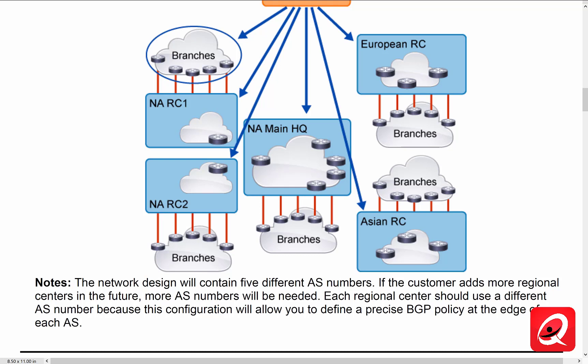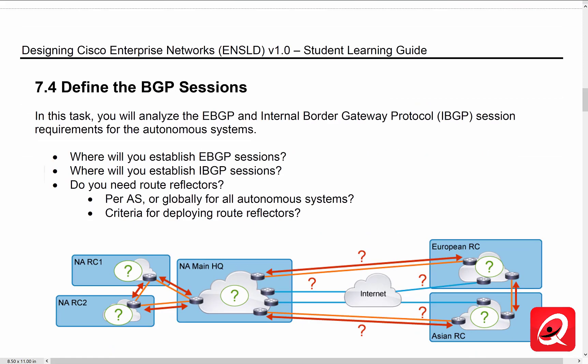Each regional center should use a different AS number because this allows us to control how connectivity takes place. We're going to have 10 gig connections between the regional centers and the main headquarters in a full mesh, meaning they're all going to be connected to each other. For that reason, we may have to decide to route through one regional center to reach the headquarters. If we're designing for scalability and administrative control, creating those separate autonomous systems is going to provide that ability right from the beginning, and we wouldn't have to redesign the network in the future when we find out we want that kind of control.